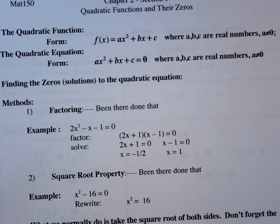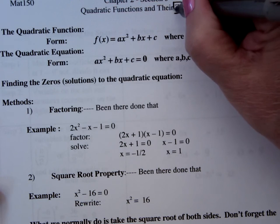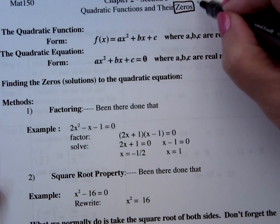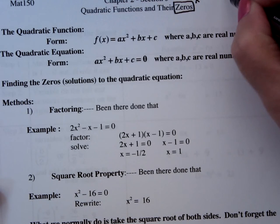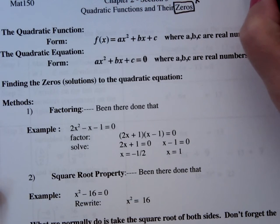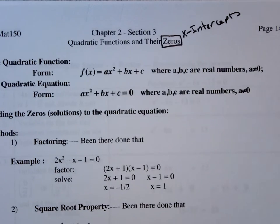Let's get this going here. Quadratic functions and their zeros. Now, zeros we're going to use, this is the same thing as x-intercepts, so zeros are x-intercepts.